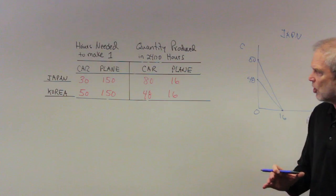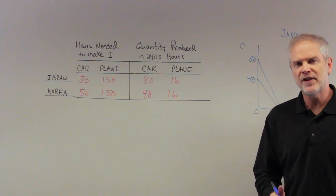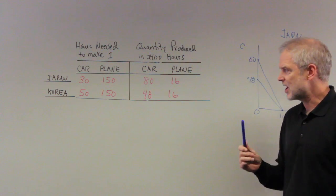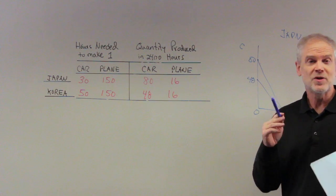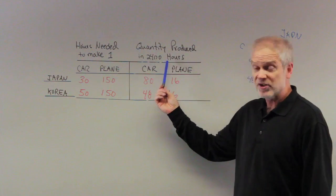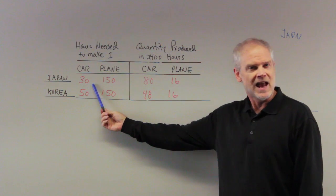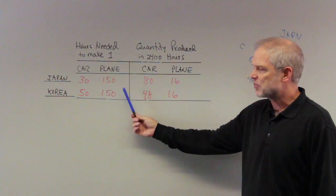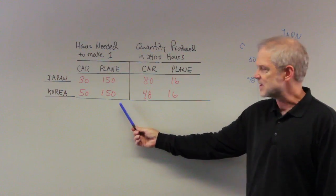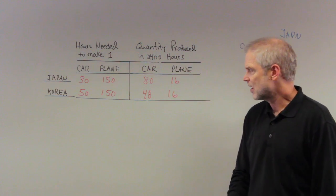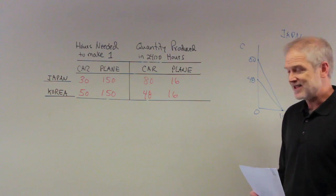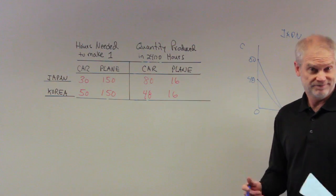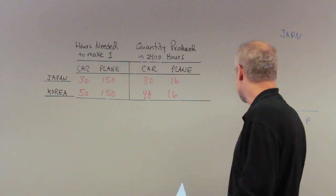I can ask you one other question that's not on this problem here, but just in general, which country has an absolute advantage in the production of either good? Well, absolute advantage means that this country can produce that particular good with less resources. Our resource here is labor. Japan clearly has an absolute advantage in the production of cars relative to Korea. They are equally productive in the production of planes, because it takes them both 150 hours to produce a plane. So then the question becomes, well, does either country have a comparative advantage? And if so, are there any gains to be obtained here from trading with each other and specializing?